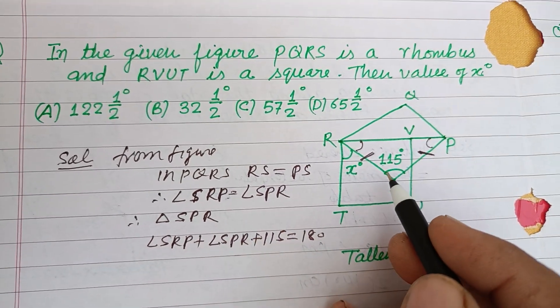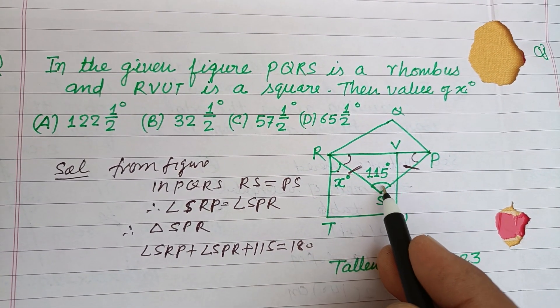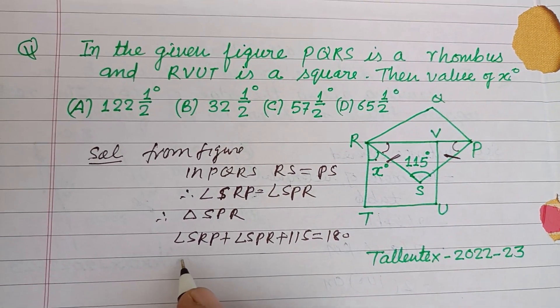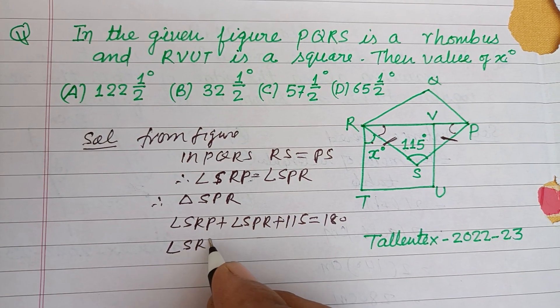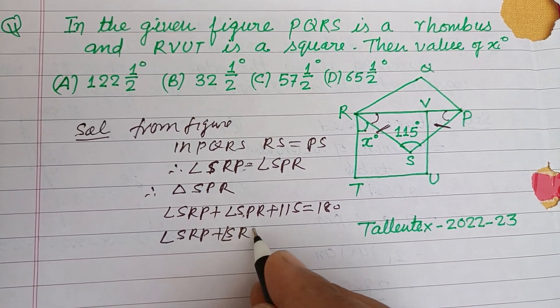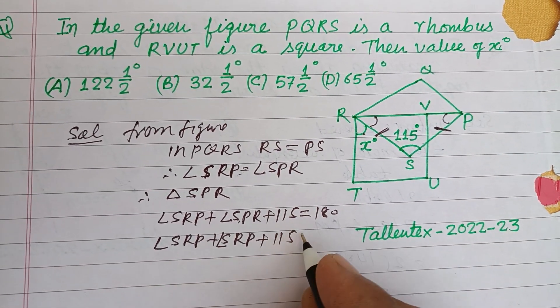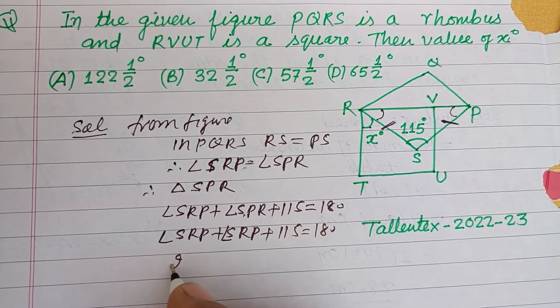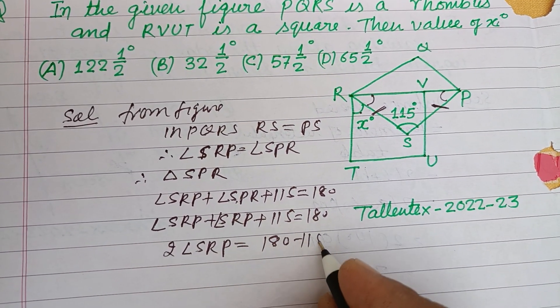We need to find the value of x. So angle SRP plus angle SRP plus 115 equals 180. This gives us 2 angle SRP equals 180 minus 115.